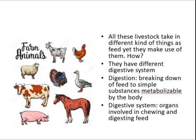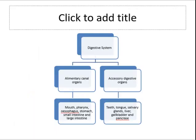Digestion is the breaking down of feed to simple substances metabolizable by the body, while the digestive system involves organs involved in chewing and digesting feed. The overall function of the digestive system is to take in feed, break it down to nutrient molecules, absorb these molecules into the bloodstream, and then rid the body of any indigestible remains.